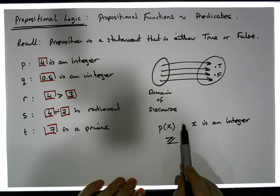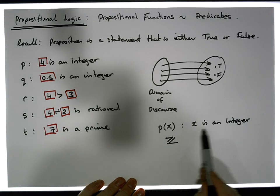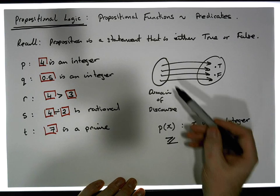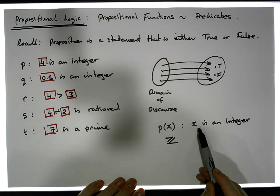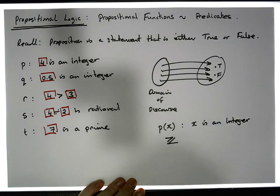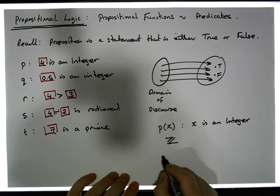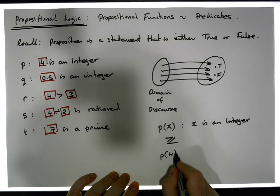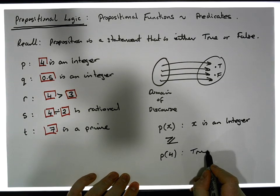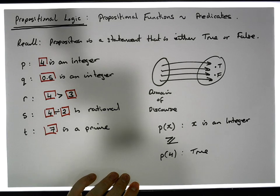p(x), when we go to evaluate it, the question being asked is: is x an integer? When a specific value is passed in for x, this becomes an actual proposition which is either true or false. For example, p(4) is actually true because 4 is an integer.